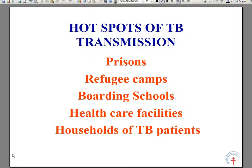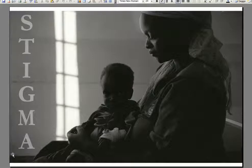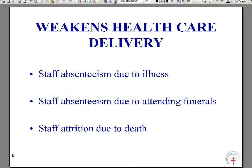Within this cauldron of activity, there are hot spots of TB transmission in prisons, refugee camps, boarding schools, health facilities, and in homes, and these fuel an out-of-control epidemic. Stigma raises its ugly head, and if patients associate HIV with tuberculosis, they may be reluctant to seek care, resulting in delayed diagnoses, poor treatment outcomes, and increased transmission of infection. Healthcare delivery is also weakened by HIV, with staff being absent because of illness or attending funerals, and healthcare workers dying.